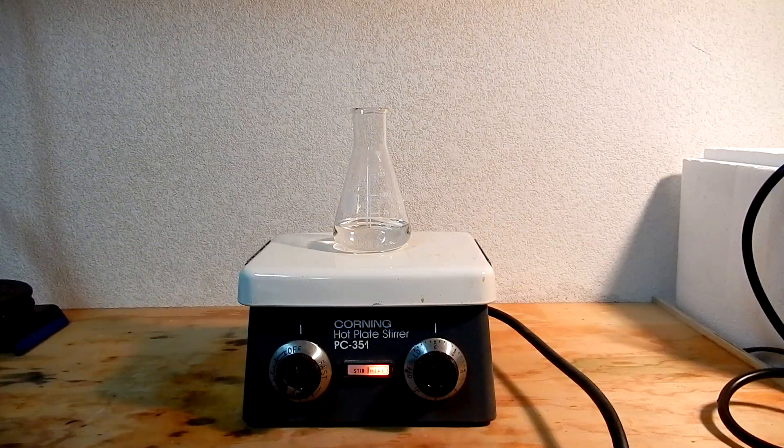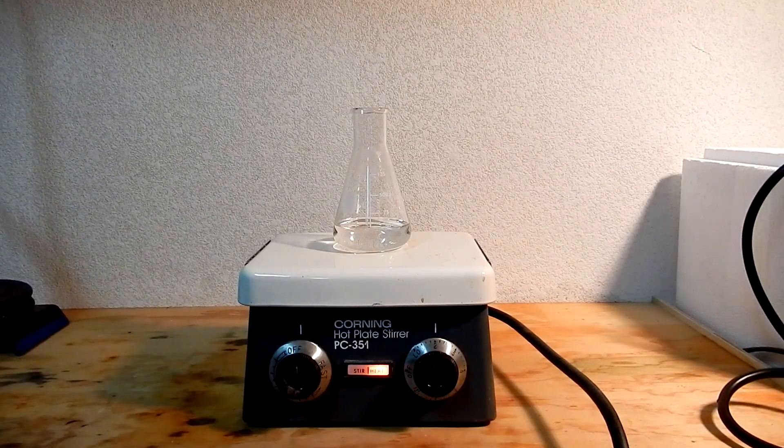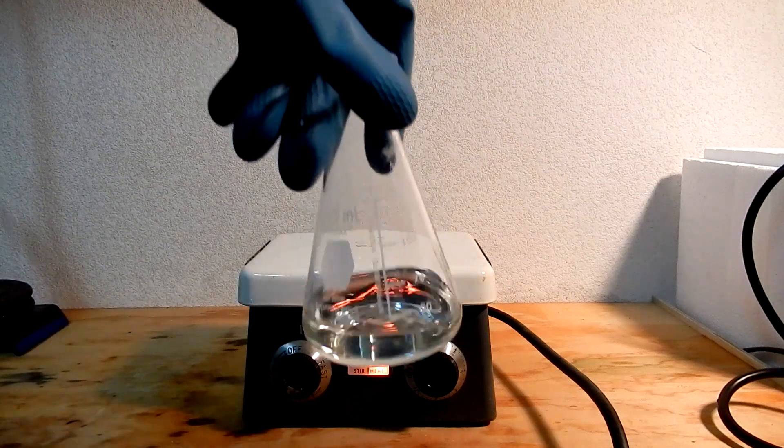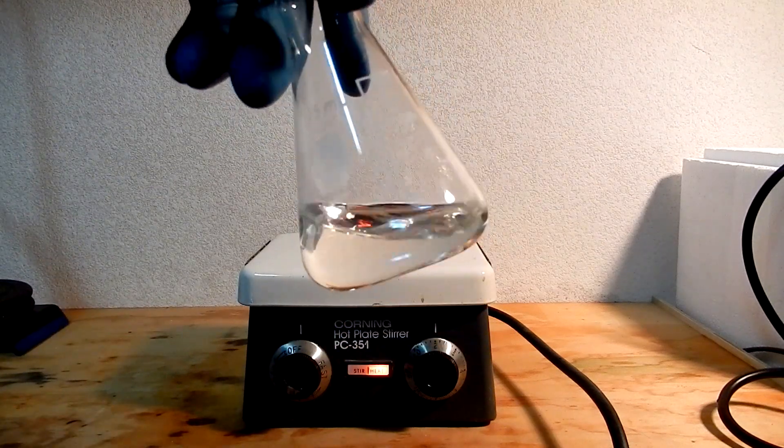The distillate, contained in a 125 milliliter round bottom flask, is placed on a hot plate set to very low heat. The goal is not to boil the solution. It is to only provide enough heat to aid in evaporation.